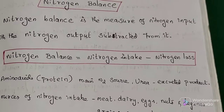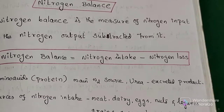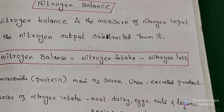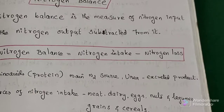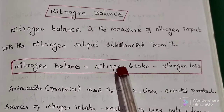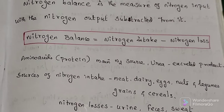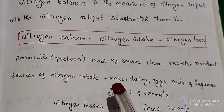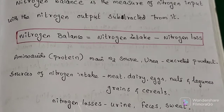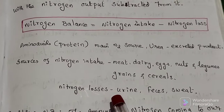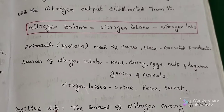When nitrogen coming into the body equals the nitrogen going out, we are in nitrogen balance. Nitrogen balance equals nitrogen intake minus nitrogen loss. Sources of nitrogen include meat, dairy and dairy products, eggs, nuts, legumes, grains, and cereals. Examples of nitrogen loss include urine, feces, and sweat.